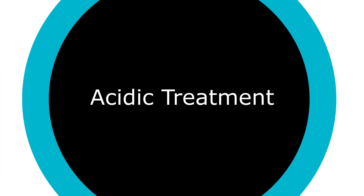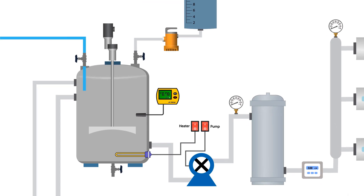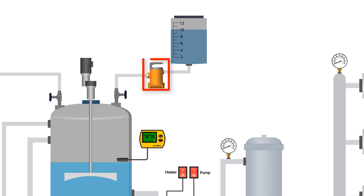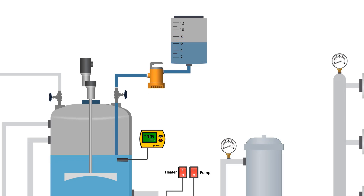Acidic Treatment. Fill the mixer tank with the required amount of distilled water. Run the dosing pump to add an appropriate quantity of hydrochloric acid to the mixer tank to achieve a pH of 2.